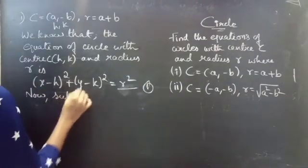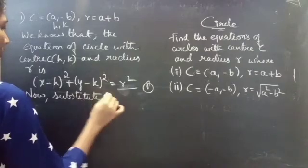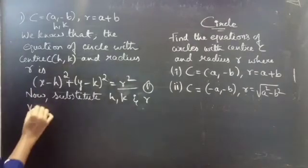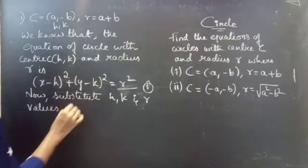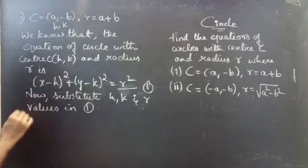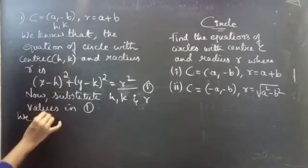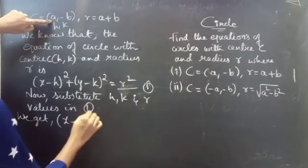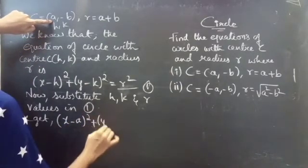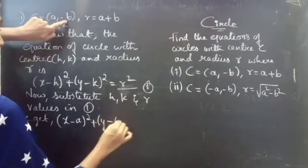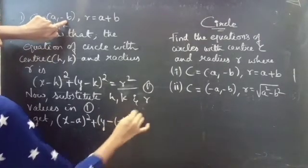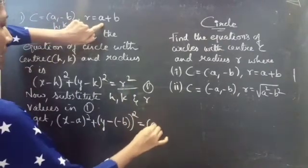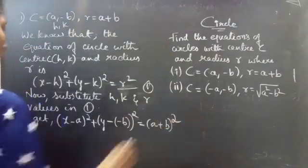Now substitute h, k, and R values in equation 1. We get x minus a whole square plus y minus (minus b) whole square equals to R square, where R is a plus b whole square.